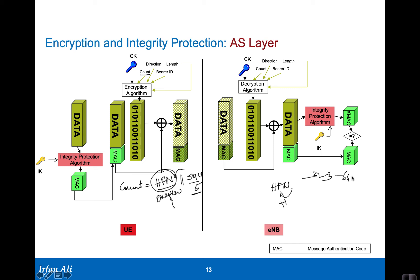So when the count reaches 64 and rolls to 65, HFN becomes 2—it is an overflow count called the hyperframe number at the RRC level, used to build the full 32-bit COUNT. The main idea is that you don't want to generate the same random number twice. Direction is 0 for uplink and 1 for downlink: when the UE sends a message it is 0, and when the eNodeB sends an RRC message the direction bit is set to 1.